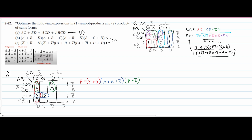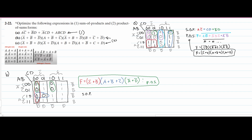And that is going to be our product of sum. So that is that equation — that is the answer for the product of sum, optimized. Now we want to solve for the sum of products, S.O.P. For this, we are going to fill in the rest of our spaces with 1s, and now we just need to solve for our SOP.